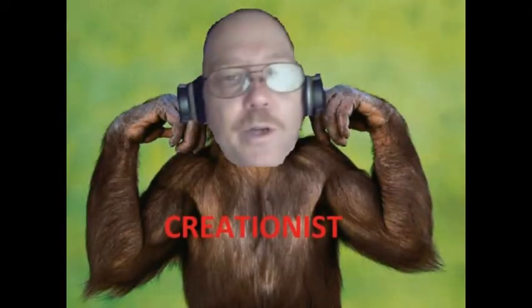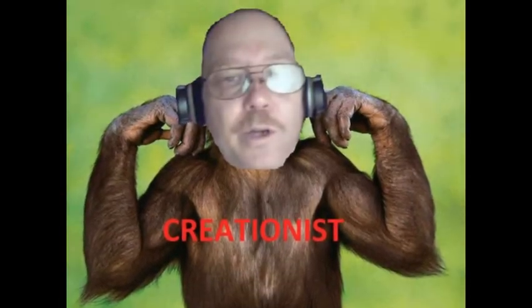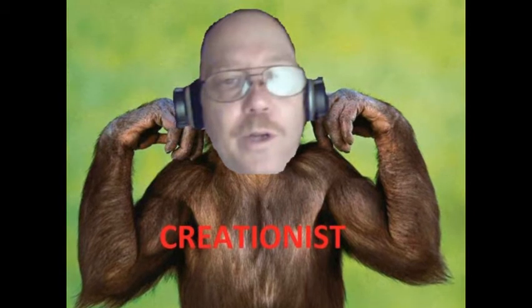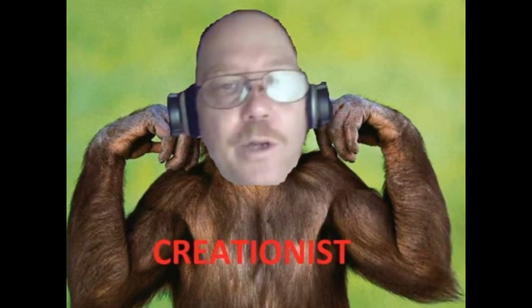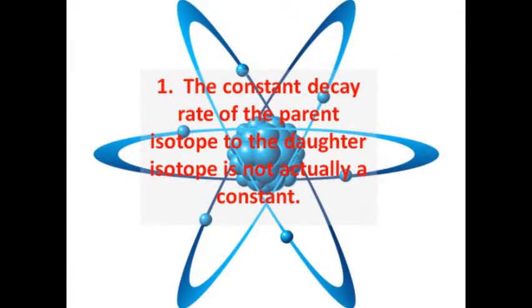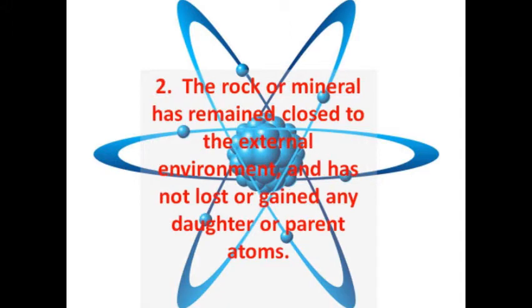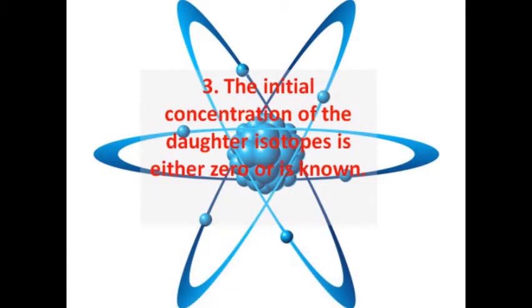Creationists like to point out that the validity of dates obtained using the decay of radiogenic isotopes rely upon a series of assumptions. Some of the most commonly raised assumptions are: 1. The constant decay rate of the parent isotope to the daughter isotope is not actually a constant. 2. The rock or mineral has remained closed to the external environment and has not lost or gained any daughter or parent atoms. 3. The initial concentration of the daughter isotopes is either zero or is known.